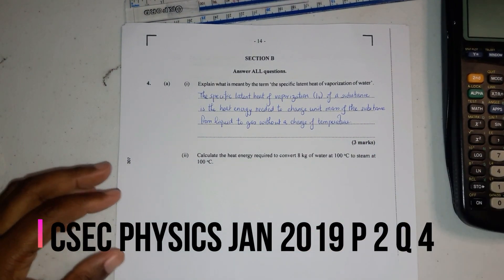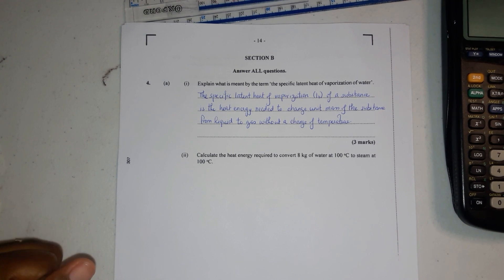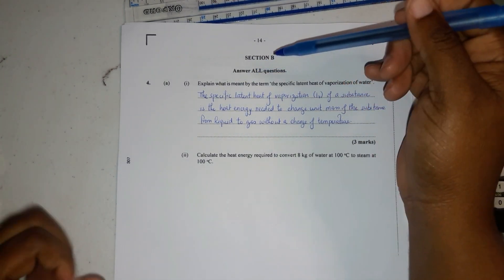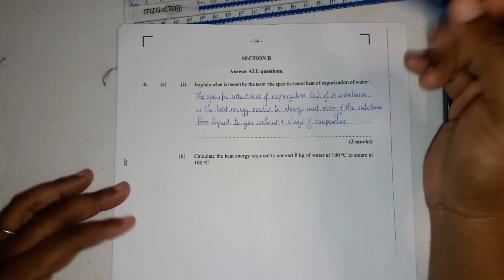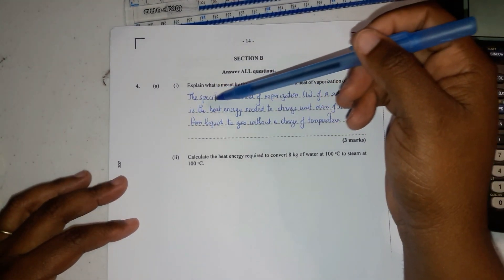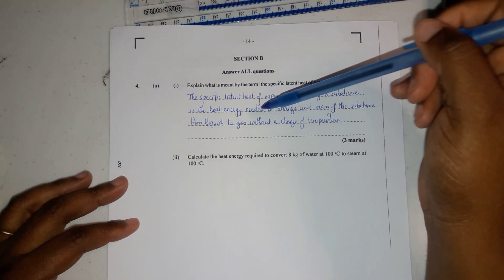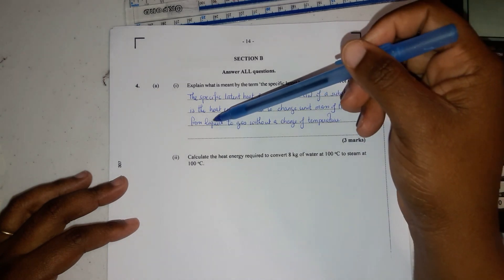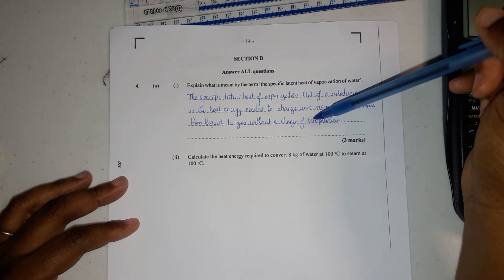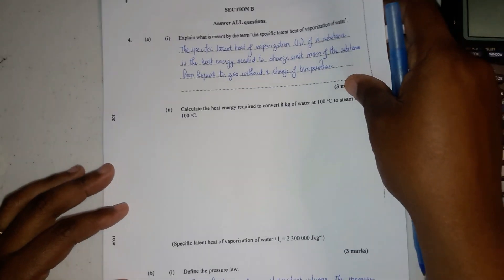Now we're on question 4, January 2019 Physics Paper 2. It says explain what is meant by the term the specific latent heat of vaporization of water. The specific latent heat of vaporization of a substance is the heat energy needed to change unit mass of the substance from liquid to gas without a change of temperature.